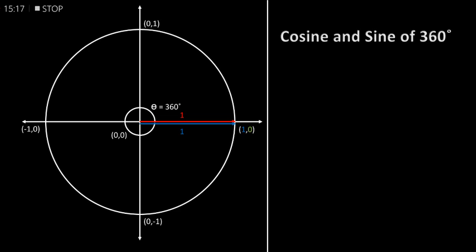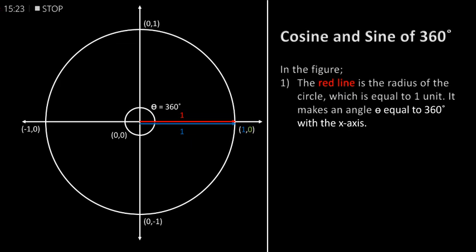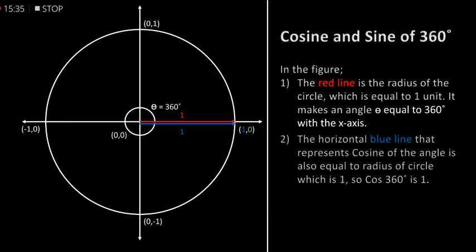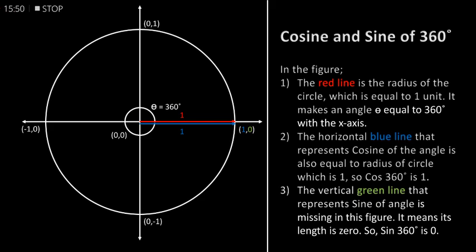Cosine and sine of 360 degrees. In the figure, the red line is the radius of the circle which is equal to 1 unit. It makes an angle theta equal to 360 degrees with the x-axis. The horizontal blue line that represents cosine of the angle is also equal to the radius of the circle, which is 1, so cos of 360 degrees is 1. The vertical green line that represents sine of the angle is missing in this figure — it means its length is 0 — so sin of 360 degrees is 0.